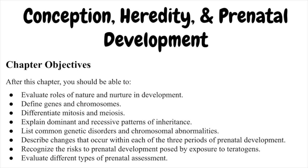Conception, Heredity, and Prenatal Development. Chapter Objectives: After this chapter, you should be able to evaluate roles of nature and nurture in development, define genes and chromosomes, differentiate mitosis and meiosis, explain dominant and recessive patterns of inheritance, list common genetic disorders and chromosomal abnormalities, describe changes that occur within each of the three periods of prenatal development, recognize the risk to prenatal development posed by exposure to teratogens, and evaluate different types of prenatal assessment.